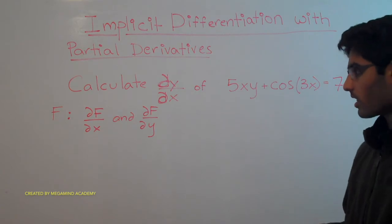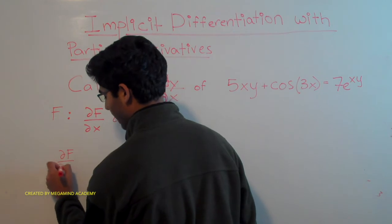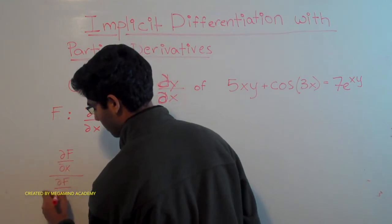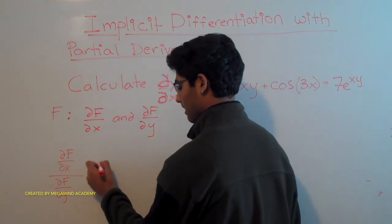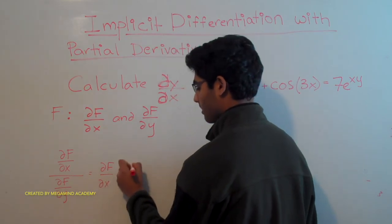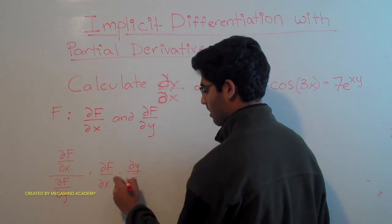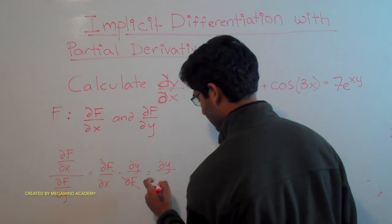The thing that we can do is df/dx over df/dy. And so what this would give us is df/dx times dy over df. These two would cancel out, which would give us dy/dx.